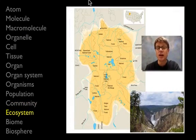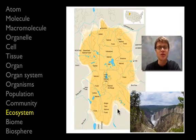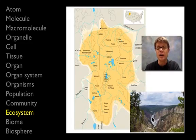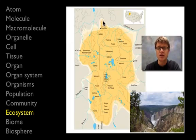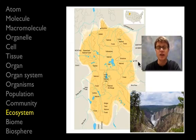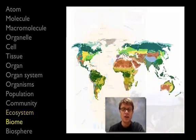Next we go to the level of the ecosystem. I happen to live right on the border of one of the greatest ecosystems in the world — the greater Yellowstone ecosystem. What have we added at the ecosystem level? Now we're adding abiotic materials: water, chemistry, and light. Interestingly, the boundary of the greater Yellowstone ecosystem was determined by looking at wherever grizzly bears are found.